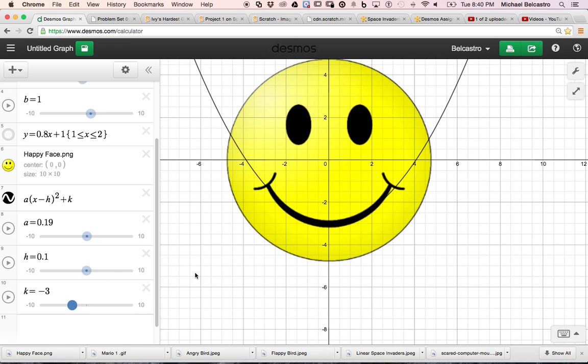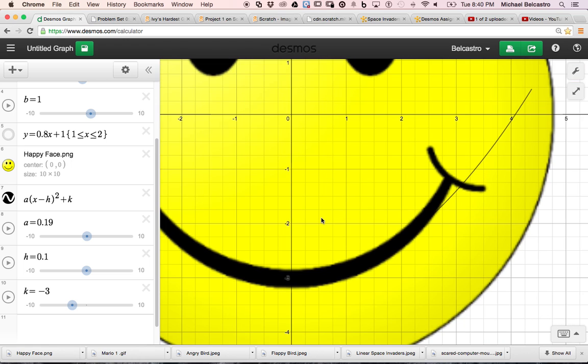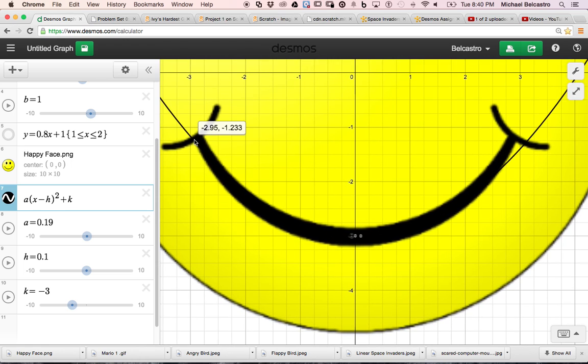Maybe I'm going to pull it up just a little. And then when we zoom in, it looks like I've gotten a pretty good smile. Now maybe I want to cut the smile off at negative 3 and positive 3.